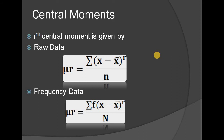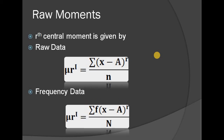The central moment equation is: mu_r = sigma(x minus x-bar) all raised to r, divided by n. Here x-bar is the arithmetic mean, where x-bar = sigma x divided by n. For frequency data, the equation becomes mu_r = sigma f(x minus x-bar) all raised to R, divided by capital N, where capital N = sigma F.